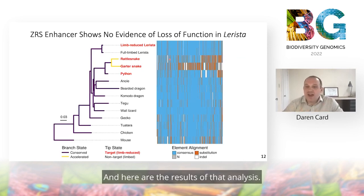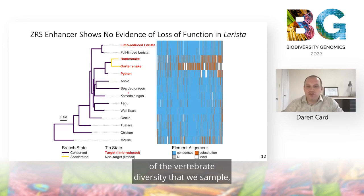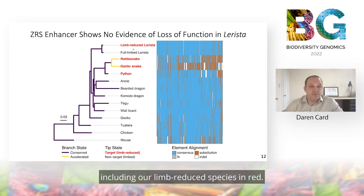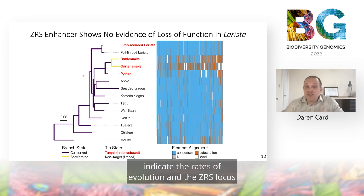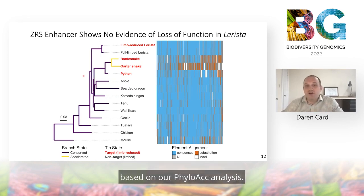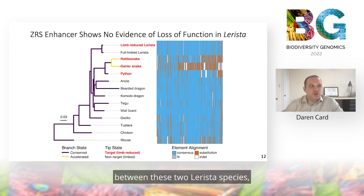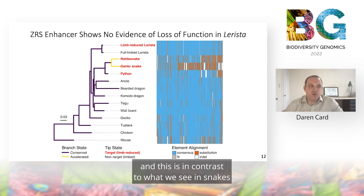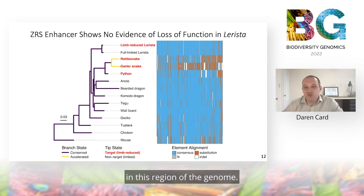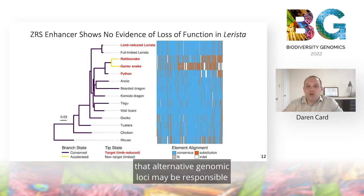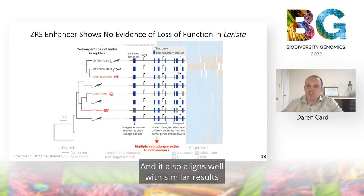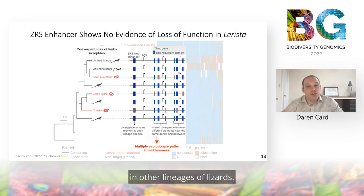Here are the results of that analysis. On the left is a phylogeny of the vertebrate diversity we sampled, including our limb-reduced species in red. Branch length and colors indicate rates of evolution at the ZRS locus based on our PhyloACC analysis. On the right, a multi-sequence alignment of the ZRS locus shows that the ZRS is relatively conserved between the two Larista species. This contrasts with what we see in snakes, where there is a great deal of sequence degeneration in this region. This provides strong evidence that alternative genomic loci may be responsible for the evolution of limb morphology in Larista, aligning well with similar results from investigations of limb reduction in other lizard lineages.